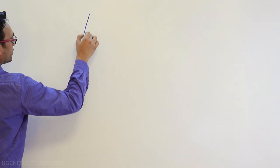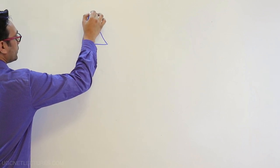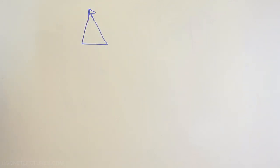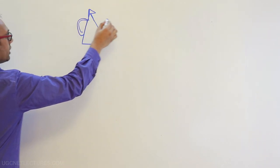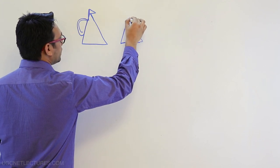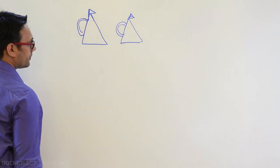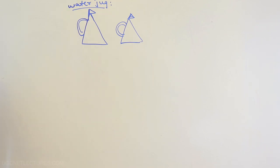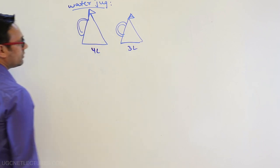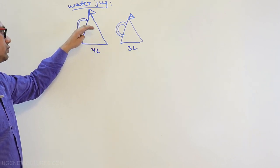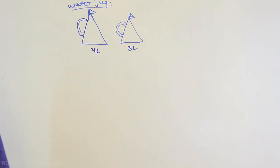The next problem is the water jug problem. We have two jugs here — this is the first jug which is having some water, and this is the second jug. The size of this jug is bigger than the size of this jug. The first jug has a capacity of four liters and the second jug has a capacity of three liters. There are no markings on these jugs to indicate how many liters of water are inside.